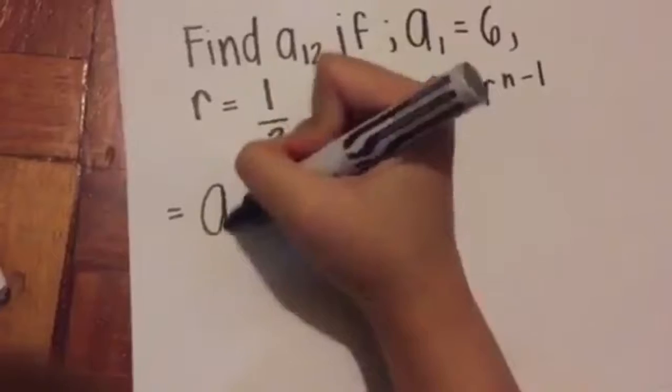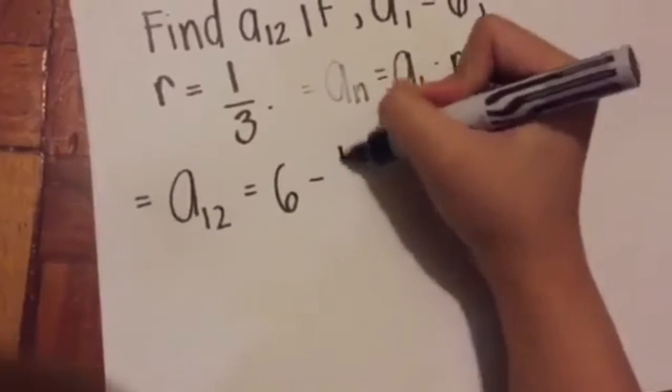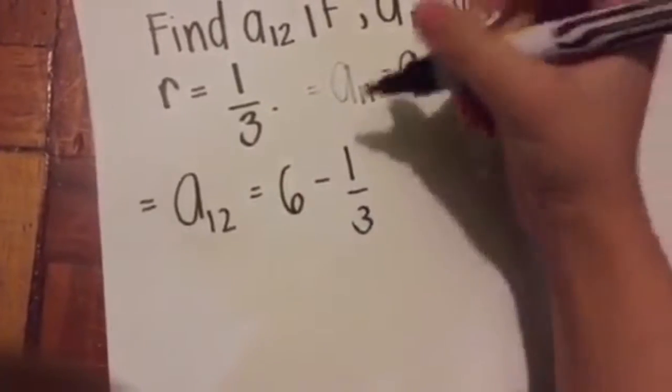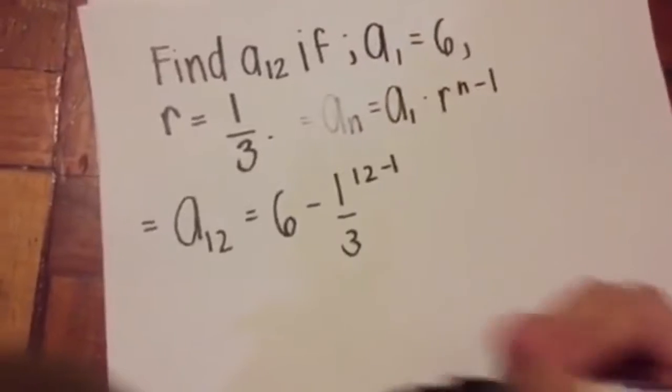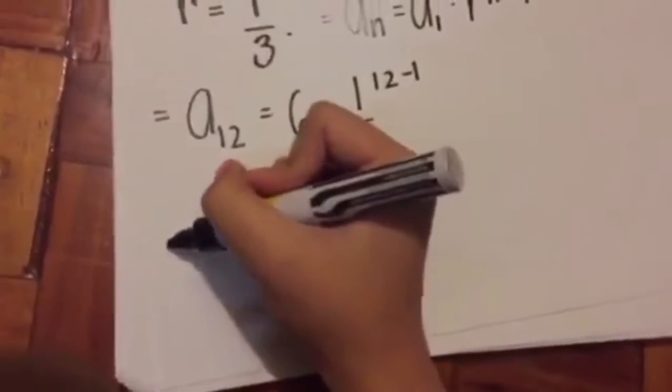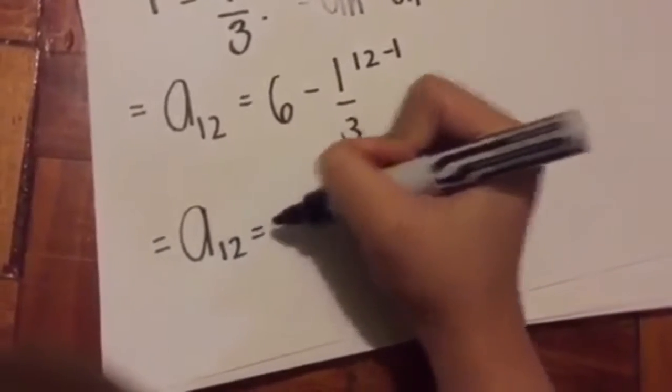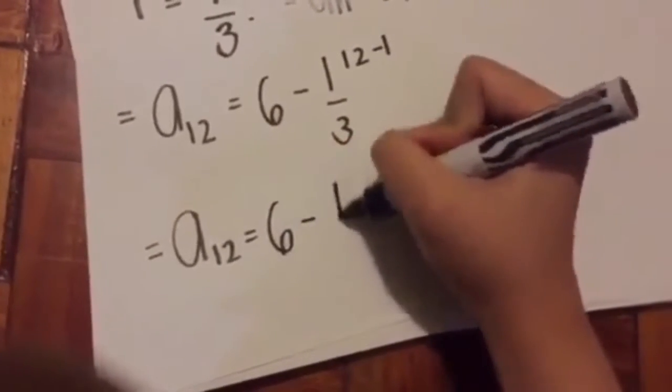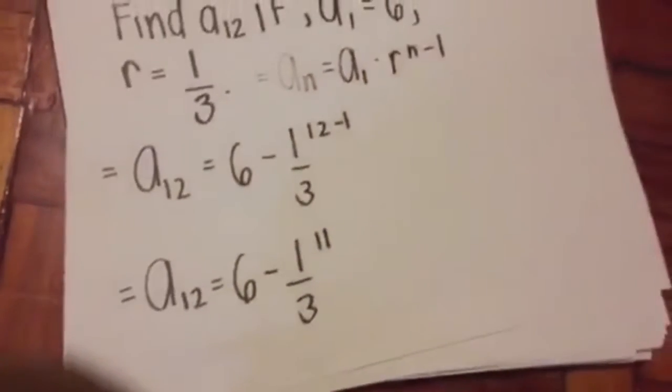Put your formula for guidance and plug in your given values. You get a12 equals 6 times 1 over 3 raised to 12 minus 1. Twelve minus one is 11, so a12 equals 6 times 1 over 3 raised to 11.